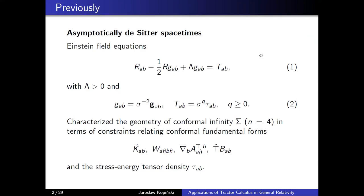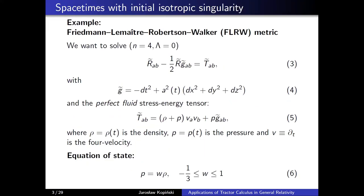I was working in the setting of asymptotically de Sitter spacetimes — spacetimes satisfying Einstein field equations with positive cosmological constant, where this non-negative constant q can be thought of as a decay rate of the matter fields as we approach conformal infinity. In the setting of asymptotically de Sitter spacetimes, I characterized the geometry of conformal infinity in four dimensions in terms of constraints relating conformal fundamental forms and the stress-energy tensor density. Those constraints included trace, extremes of curvature, the projected part of the Weyl tensor with two normal vectors, hypersurface divergence of the projected Cotton tensor, and the projected part of the Bach tensor. Today I want to focus on a different class of spacetimes: spacetimes with initial isotropic singularity.